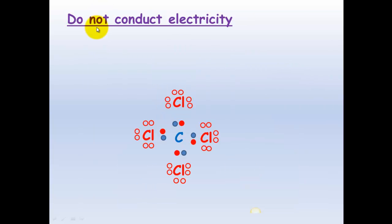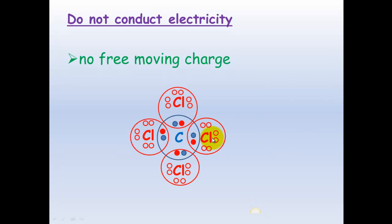They do not conduct electricity. For something to conduct electricity, there needs to be free moving charge such as electrons or ions. And in this case with covalent bonds, there's no free moving electrons and no charged particles. If we have a look here at carbon tetrachloride, you'll see here are the electrons, and the electrons are shared but they're not free to move. They're shared between these different atoms.